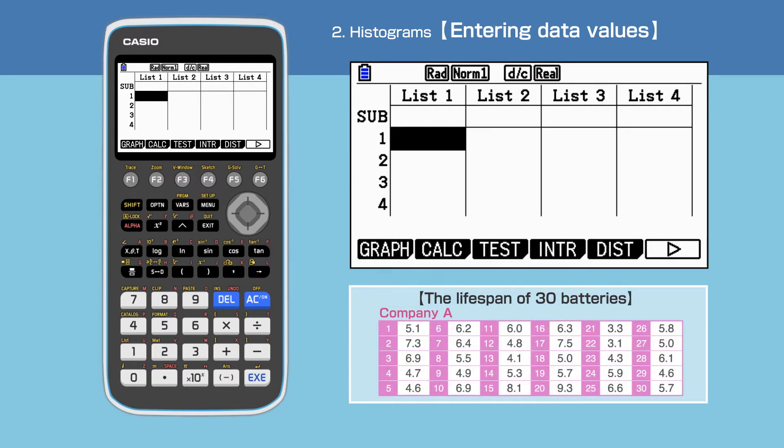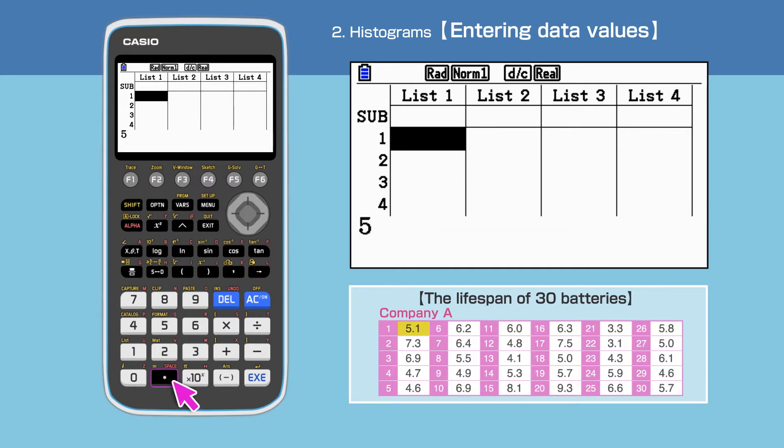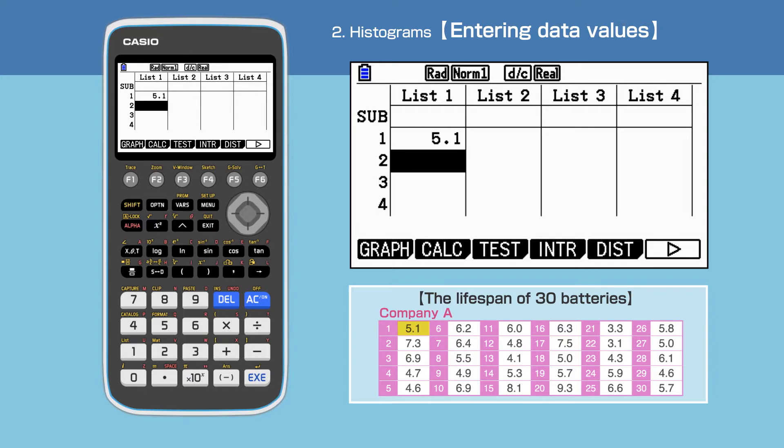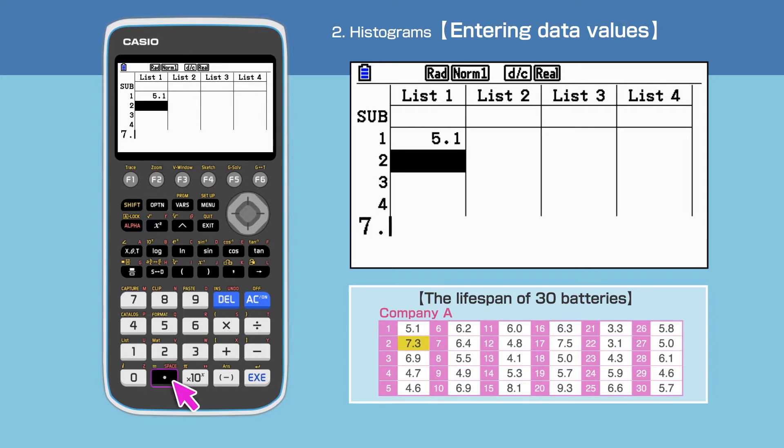As example data, we will use the lifespan of batteries of Company A. Enter the 30 data values for Company A in list 1. We need to enter the first data value and then press execute to proceed to the next line. Repeat this to input all 30 data values.